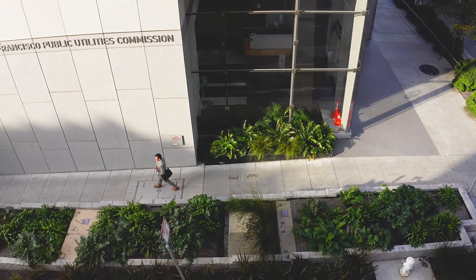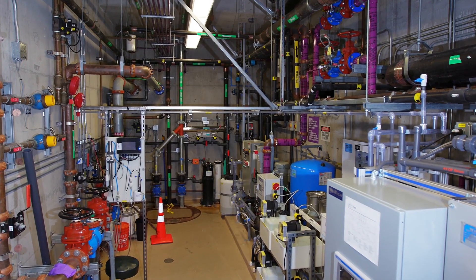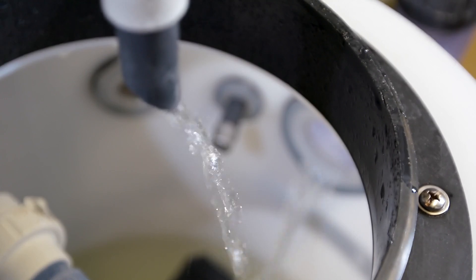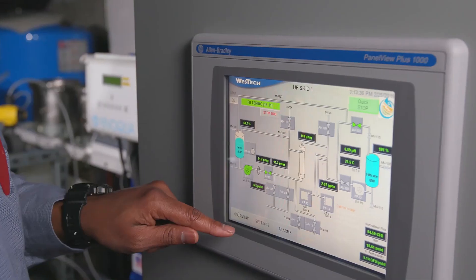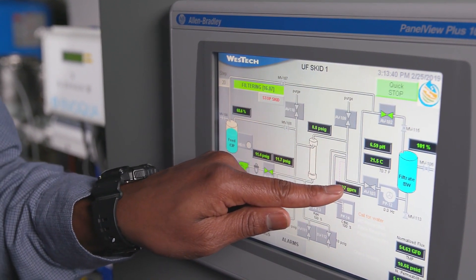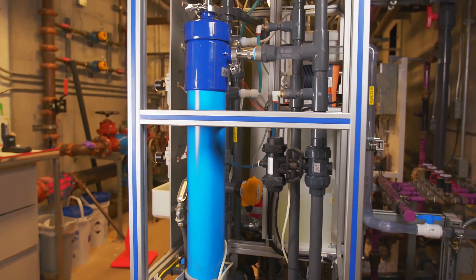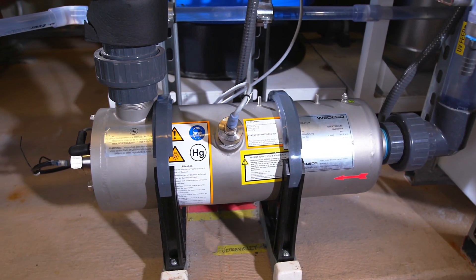The Pure Water SF system takes the recycled water from the living machine and puts it through a small-scale advanced water purification process. Like other purification facilities in California, the Pure Water SF system provides a three-step purification process: ultra-filtration, reverse osmosis, and advanced oxidation with ultraviolet light.